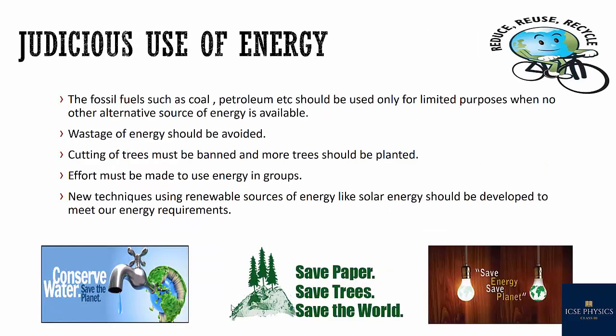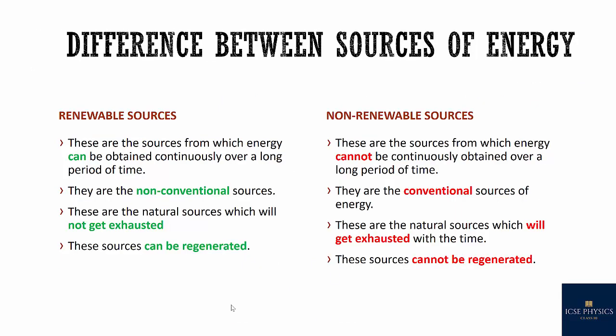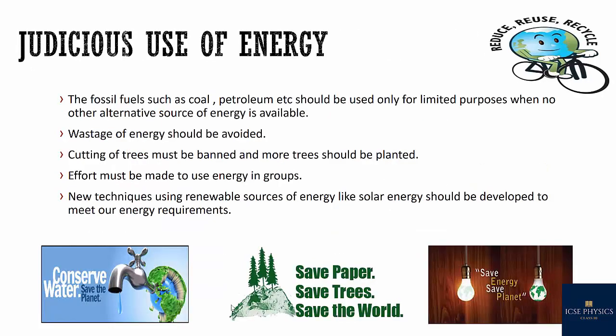Since we use various sources like coal, petroleum, and natural gases abundantly and these cannot be easily regenerated, we have to use energy very cautiously. Fossil fuels like coal and petroleum should be used only for limited purposes when no other alternative source of energy is available. Wastage of energy should be avoided. Cutting of trees must be banned and more trees must be planted. Effort must be made to use energy in groups.